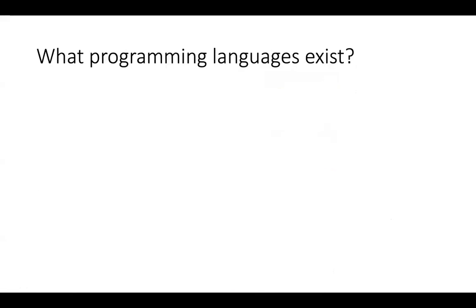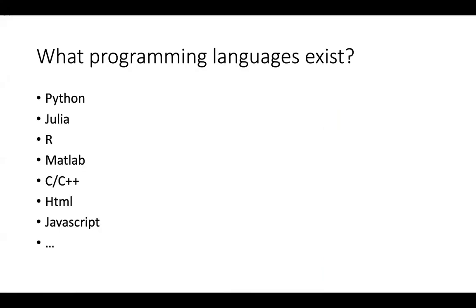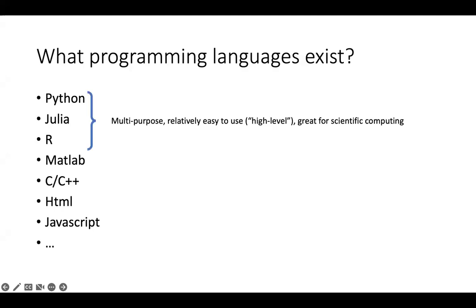What programming languages exist? There are a lot. Python is the main one we'll be using, and you'll use a little Julia next week. You may have heard of R, MATLAB, C, C++, HTML, and JavaScript — the list goes on. Python, Julia, and R are multi-purpose, relatively easy-to-use high-level languages, great for scientific computing.